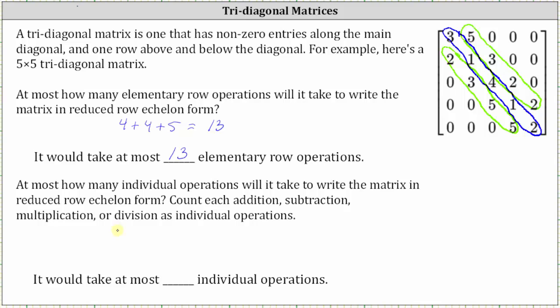That gives us at most two times (four plus four) individual operations to get the zeros, and then plus one operation to get ones along the main diagonal, so plus five. Simplifying, we have two times eight plus five, which is equal to 21. It would take at most 21 individual operations to write the matrix in reduced row echelon form.